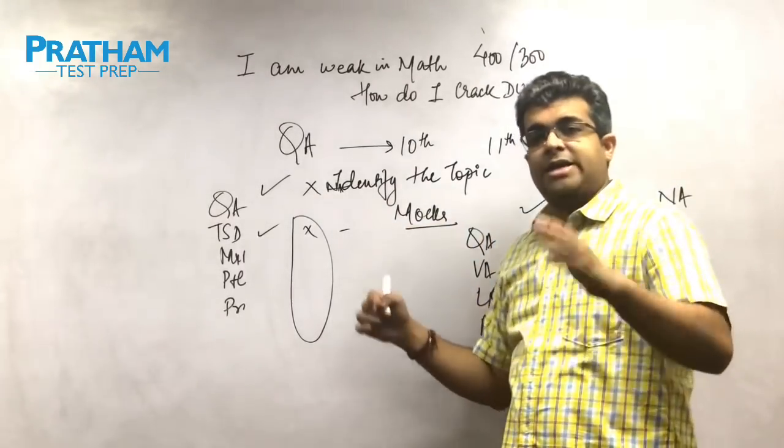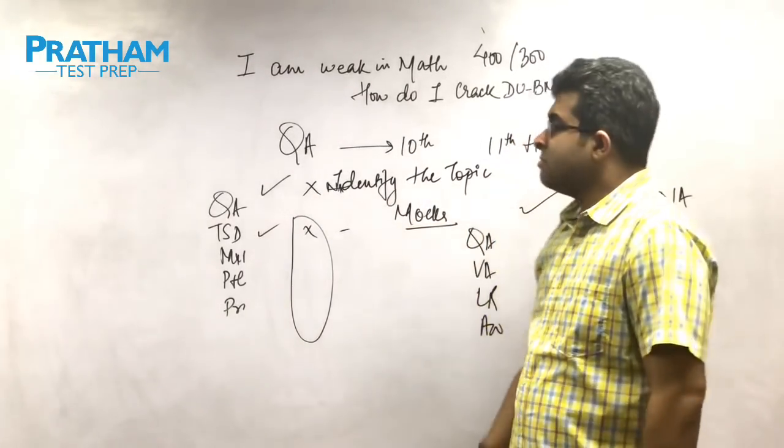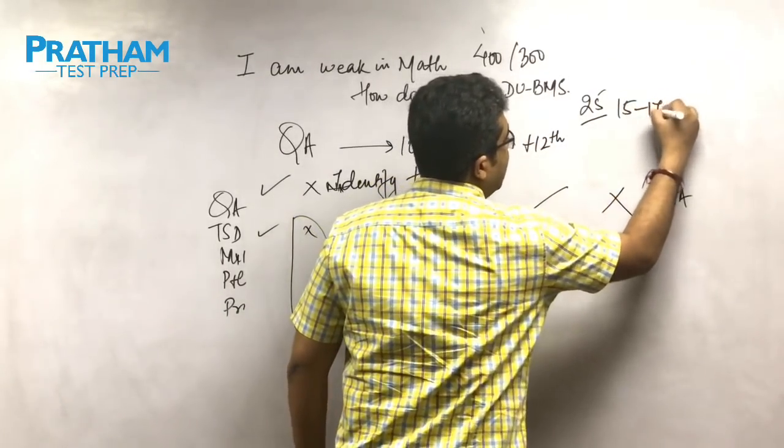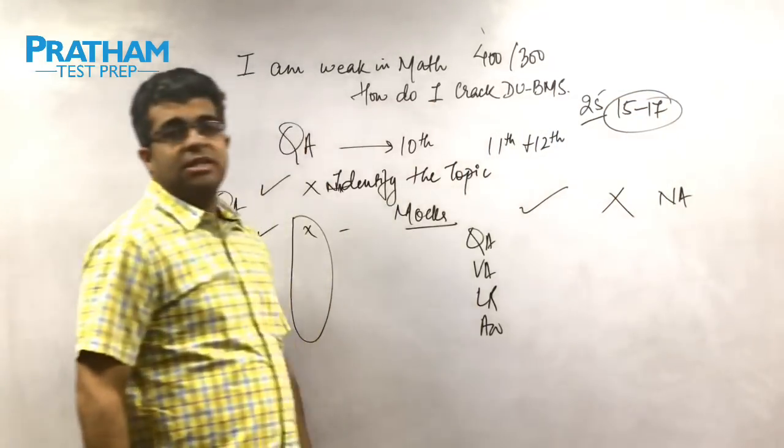Now quant we can expect to be a difficult section. So out of the 25 questions that we are getting, around 15 to 17 questions is what we need to get right in the first go.